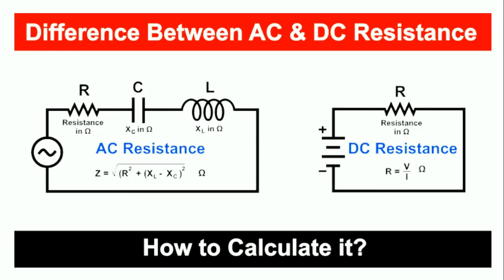The overall impedance — that is, AC resistance — when both capacitive and inductive reactances are present in the circuit, is given as Z = √(R² + (XL − XC)²). For DC resistance, we simply apply Ohm's Law: R = V / I.